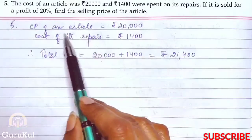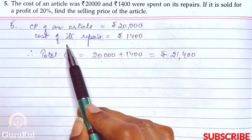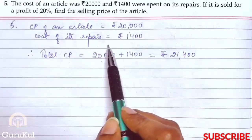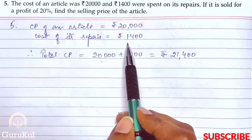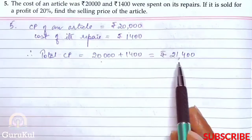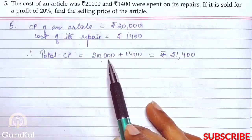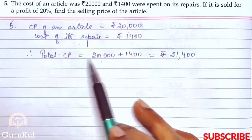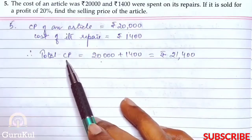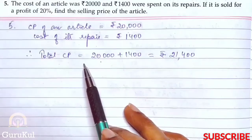Let me explain. The article's cost was rupees 20,000 and some other charges were added, which is why both are added together — because this is our total cost price.